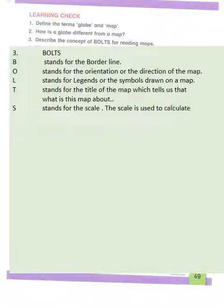S stands for the scale. The scale is used to calculate the actual area of land or a water body. To recap: B stands for border line, O stands for orientation, L stands for legend, T stands for title, and S stands for the scale.